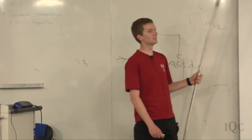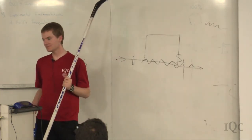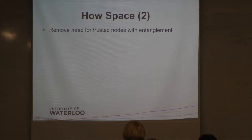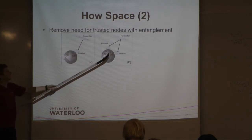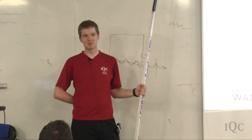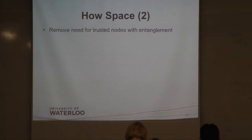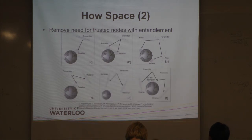We can also remove the need for trusted nodes using entanglement. One satellite can send entangled photons to two ground receivers, which then perform the BBM-92 protocol directly. There are lots of different scenarios, getting more and more complicated, but many ideas exist for doing QKD with satellites.